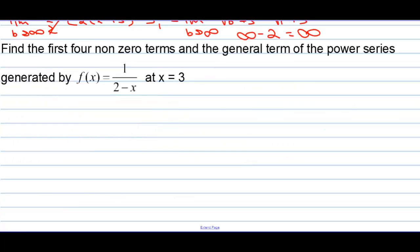Find the first four non-zero terms in the general term of the power series generated by this at x equals 3. The first thing you need to take care of is the fact that it's centered at 3. So we have 1 over 2 minus x minus 3. Now, we can't just throw a minus 3 in randomly, so we have to balance that out. If we distributed the negative through, we'd have 2 minus x plus 3. So I really need the minus 3 again. So really, I've added 3, and I've subtracted 3 to the denominator. You can do that. You can add nothing. That's okay.